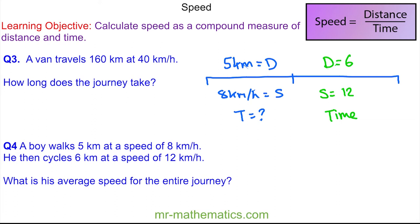So I can work out the time for the first part of the journey using our formula where the speed of 8 is equal to the distance of 5 divided by time. So the time will be 5 divided by 8, which is 0.625 of an hour. I'll come back to that in a second.